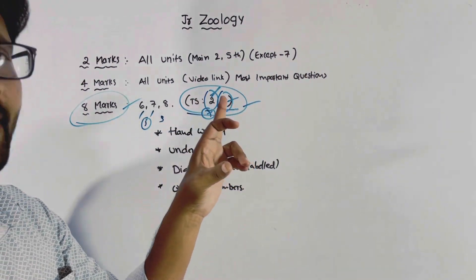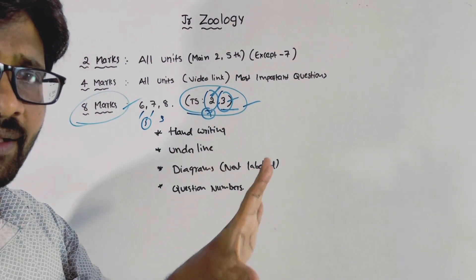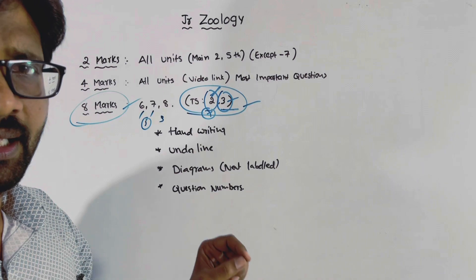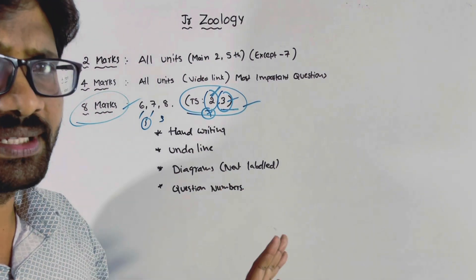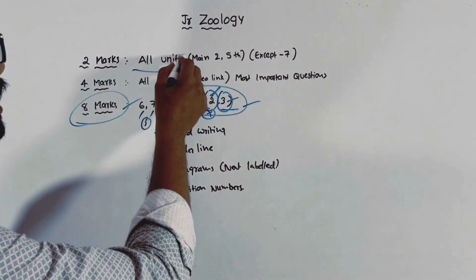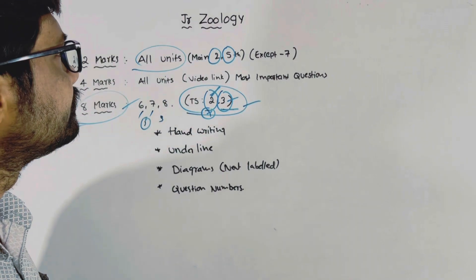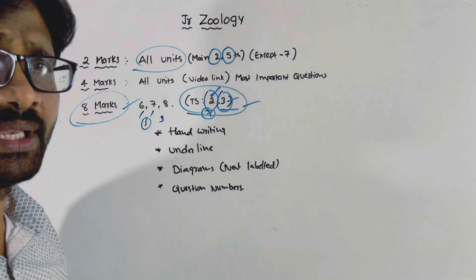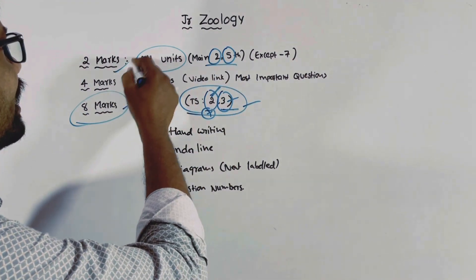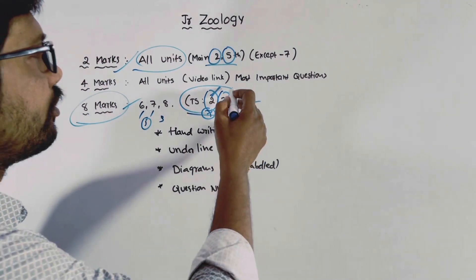Out of 8 chapters, select 6 chapters. Study all the important questions listed for those 6 chapters. Among those, for the remaining 4-mark questions, read and practice them. For the chapters you want to skip, at least study 2 marks from each. Focus on the 2nd and 5th chapters — study both of them for 2-mark answers.